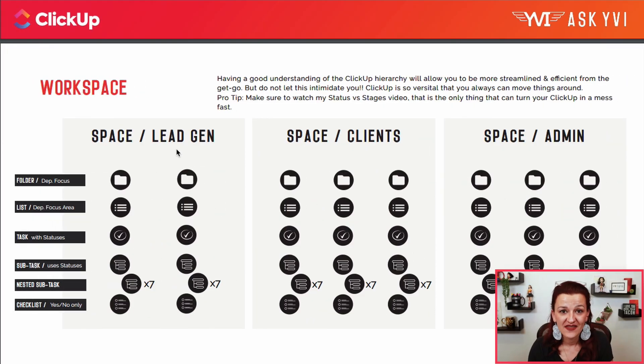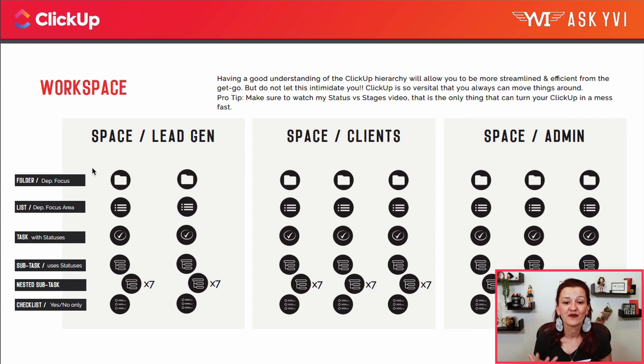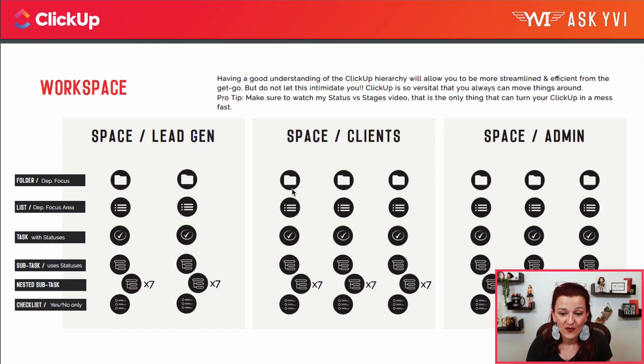For most people, your space is going to be the department in your business. Underneath that is your department focus. For example, clients is always the easiest one — you have one space for clients, then the folder underneath that is each individual client. Within those folders, you can have one or multiple lists. Those lists are your focus area — for example, client to-dos, client calls, client assessments.